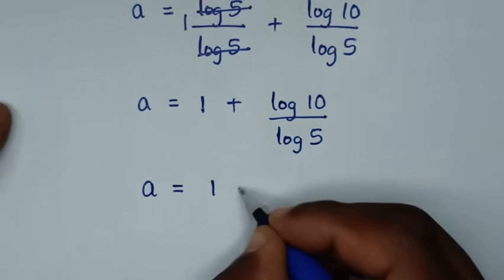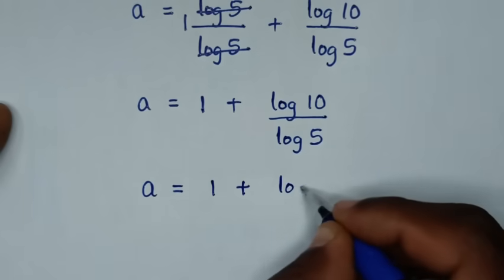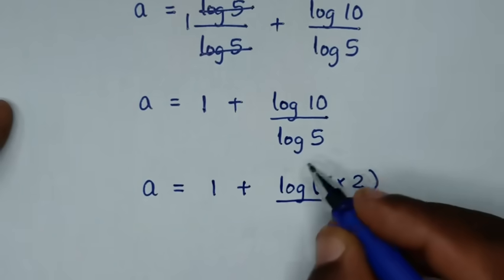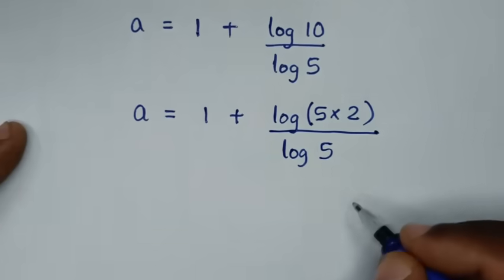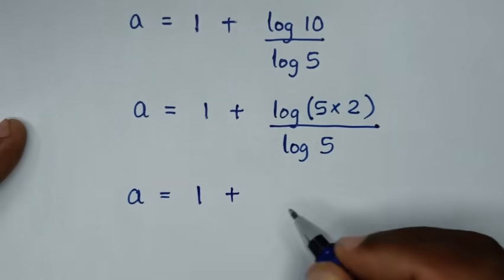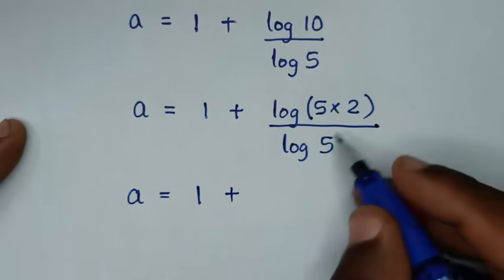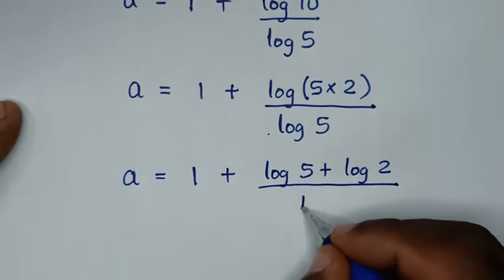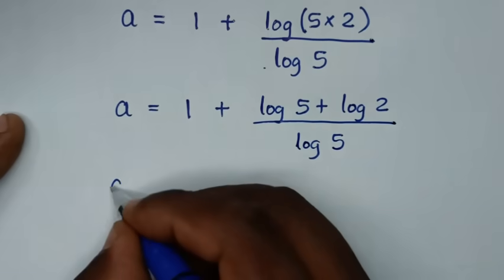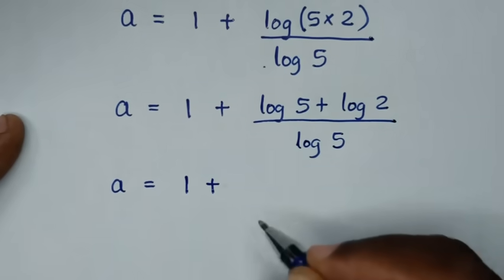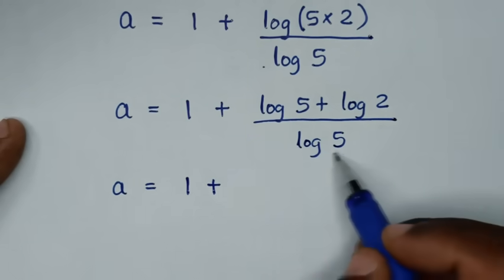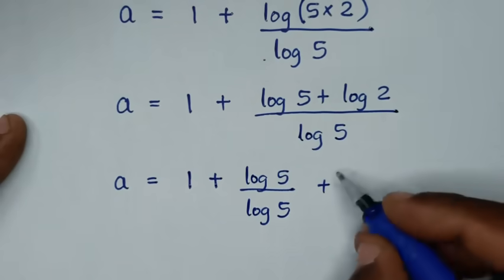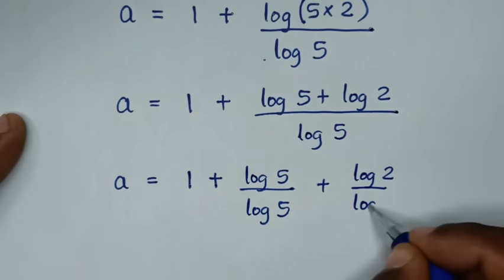In the next step, a is equal to 1 plus log of 10 over log of 5. Now 10 is the same as 5 times 2, so log of 10 becomes log of 5 plus log of 2, giving us log of 5 over log of 5 plus log of 2 over log of 5.